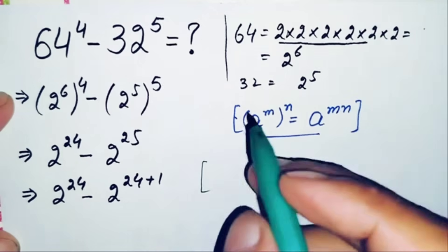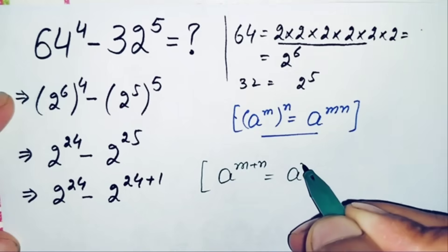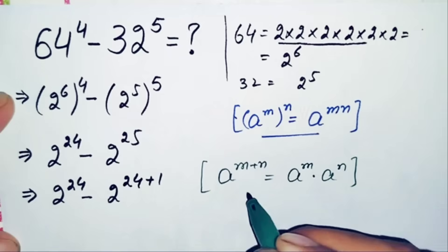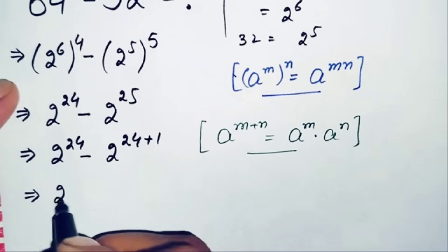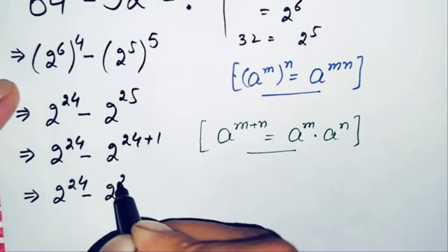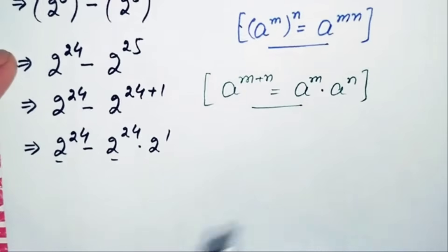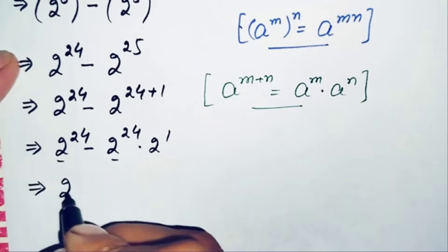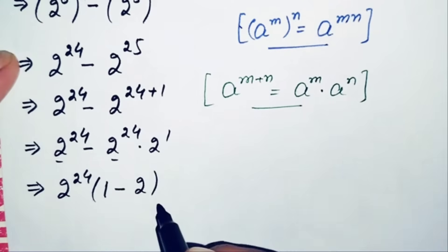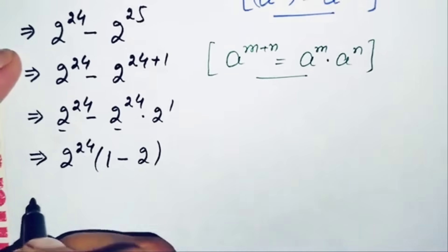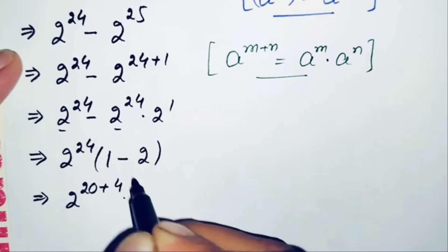We apply the exponential property a^(m+n) = a^m times a^n to the second term. So 2^(24+1) becomes 2^24 times 2^1. Now 2^24 is common in both terms, so we factor it out. This gives us 2^24 times (1 minus 2), which equals 2^24 times (negative 1).